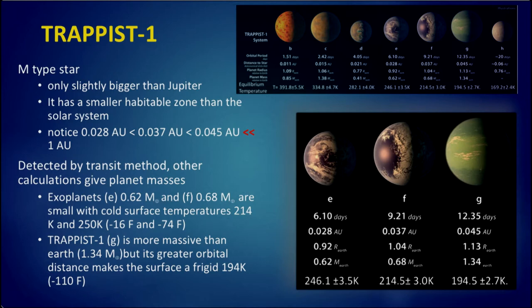An M-type star is not that much larger than Jupiter, so it has a much smaller habitable zone than the full extent of the solar system. This system was detected by the transit method, but other calculations give the planet masses.